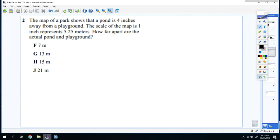All right, number two. The map of the park shows that the pond is four inches away from the playground. The scale of the map is one inch for every 5.25 meters. So you have one inch for every 5.25 meters. So four inches comes up here and cross multiply. Four times 5.25 is 21. So it would be 21 meters away.